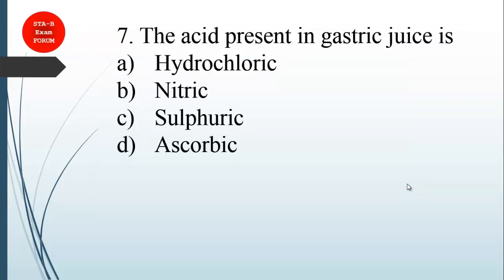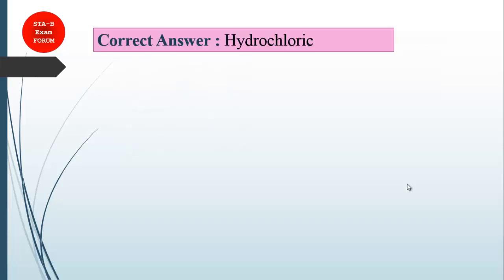The acid present in gastric juice is? Let's eliminate one by one. Ascorbic acid is just vitamin C, so it can't be in gastric juice. Sulfuric and nitric are dangerous compounds which should not be present in gastric juice. The correct answer is hydrochloric acid.